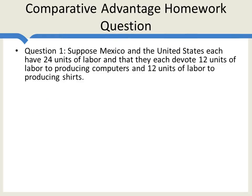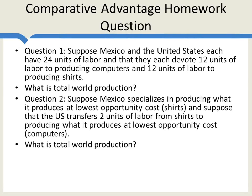I'll leave some of the details to homework questions, which we'll go over in a future video. Question one: suppose that Mexico and the United States each have 24 units of labor, and each devote 12 units of labor to producing computers and 12 units to producing shirts. That's our baseline scenario — what is total world production? Question two: suppose Mexico specializes in producing what it produces at lowest opportunity cost, which is shirts, and the US transfers two units of labor from shirts to producing what it produces at lowest opportunity cost, which is computers. What then is total world production?